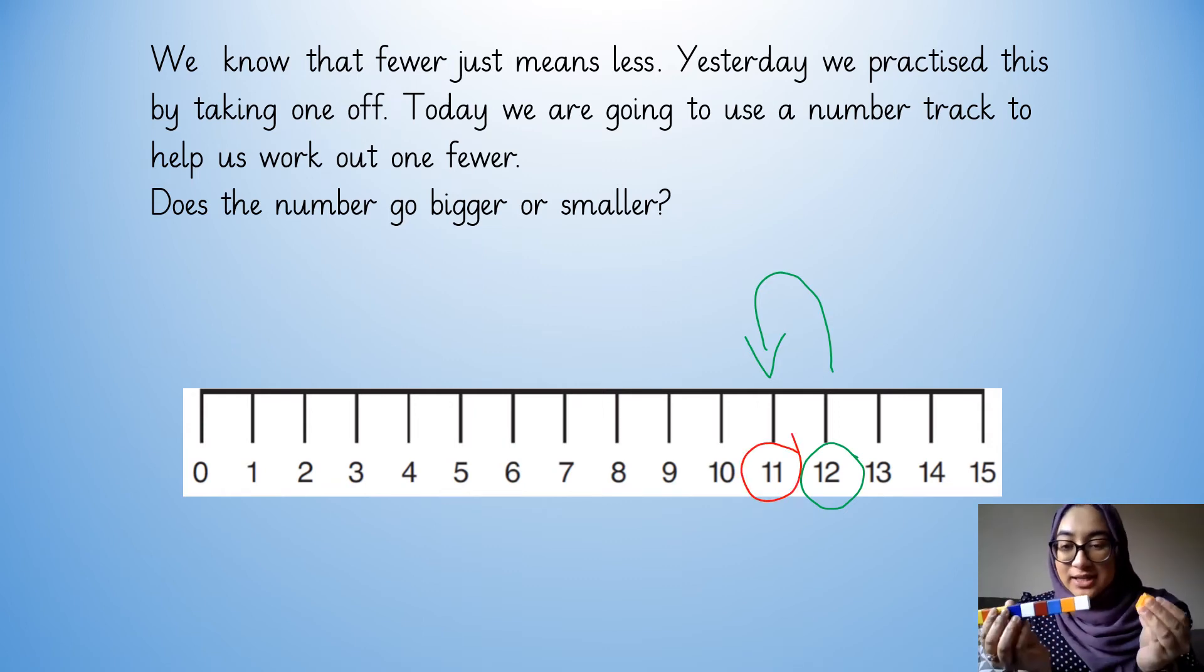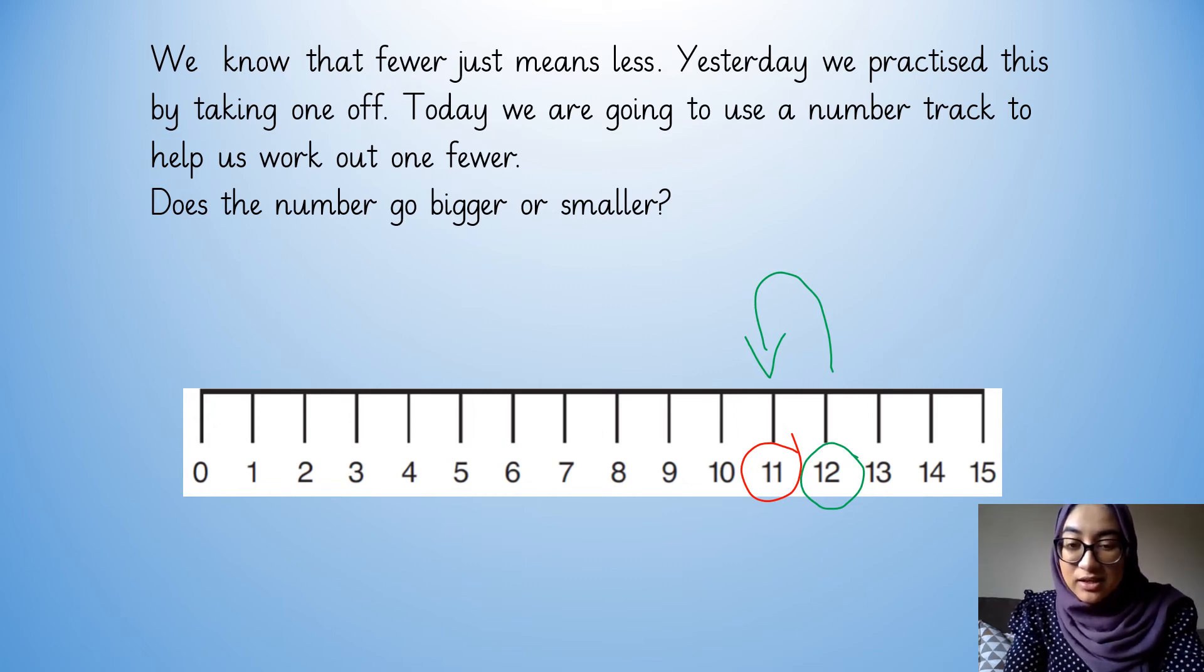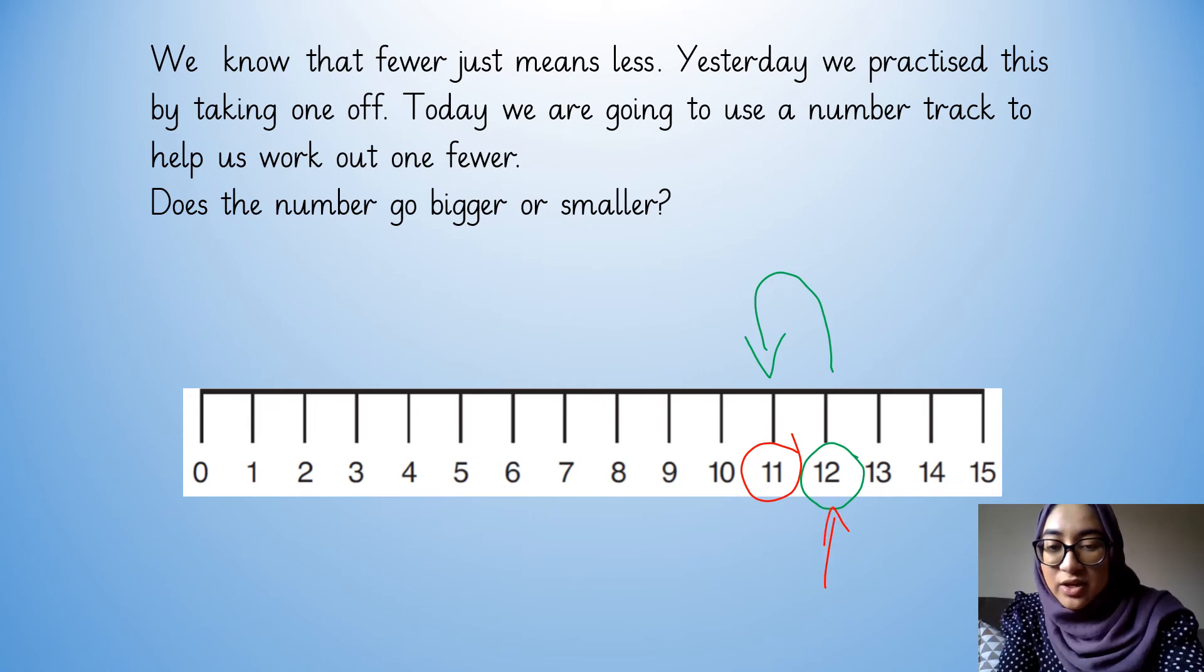So just like we worked out, I started off with 12, took one off, and now I've got 11. The number track tells us the exact same answer. So I started off with 12, then I've taken one off, and now I've got 11.